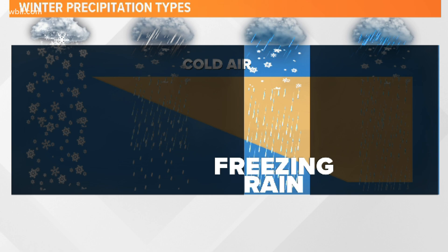Well, initially it starts off as snow in the upper levels of the atmosphere, and as it continues to fall, it hits a layer of warm air where it transitions back into rain. Then, right before hitting the surface, it runs into another thin layer of cold air, and that's when it transitions into freezing rain.